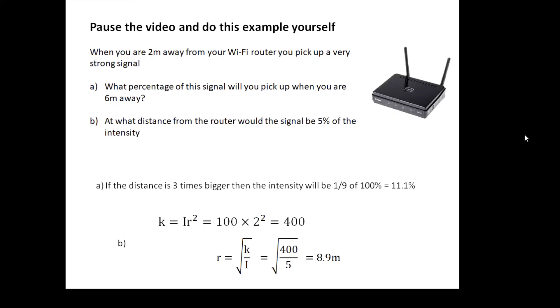If the intensity is 100 percent at 2 meters, that gives me k = 400. Then, the tricky part: I work out the value of r where the intensity is 5 percent, and I get 8.9 meters. Which is probably why you don't get a very good Wi-Fi signal in the garden.